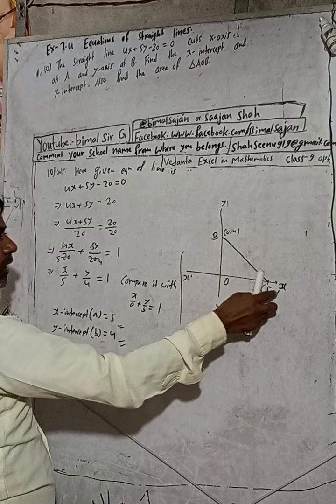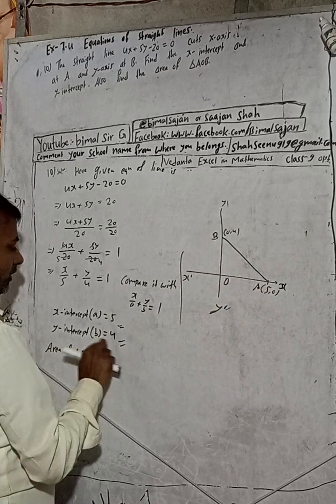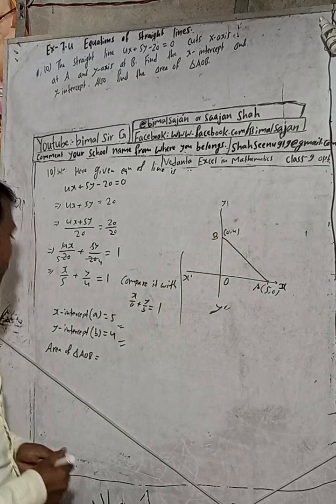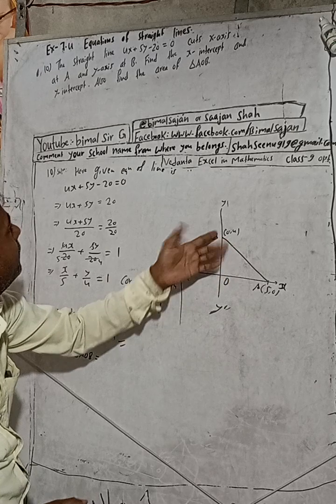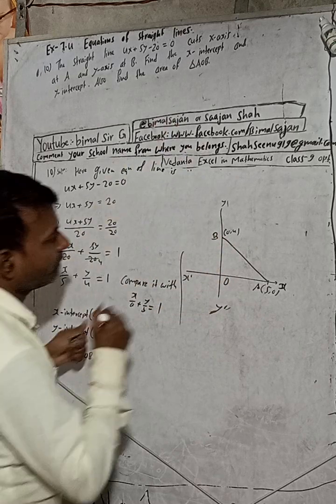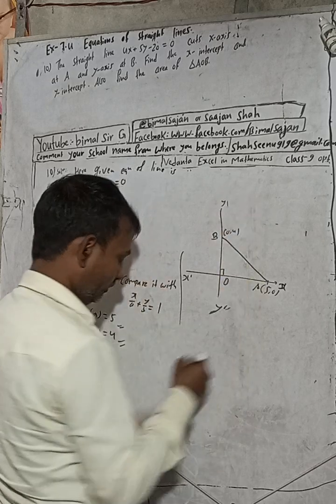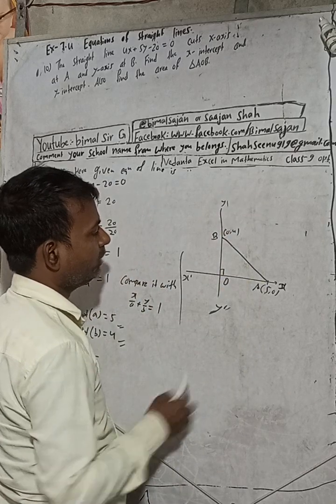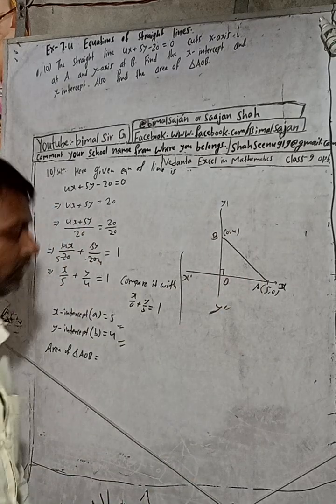So the question is telling you to find this triangle, this A, AOB, this triangle. And we know that in this triangle, this is 90 degrees, because axes are perpendicular to each other. X-axis and Y-axis are perpendicular to each other. This is perpendicular, 90 degrees.